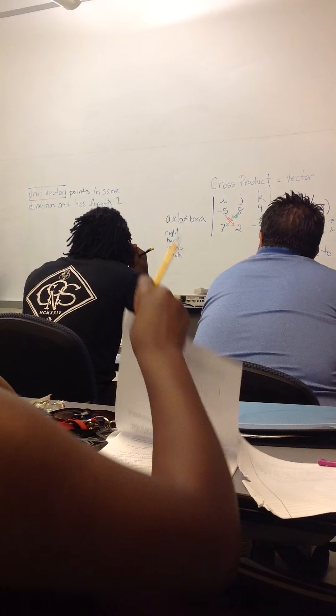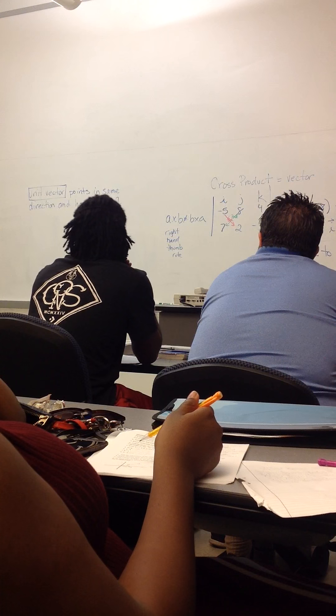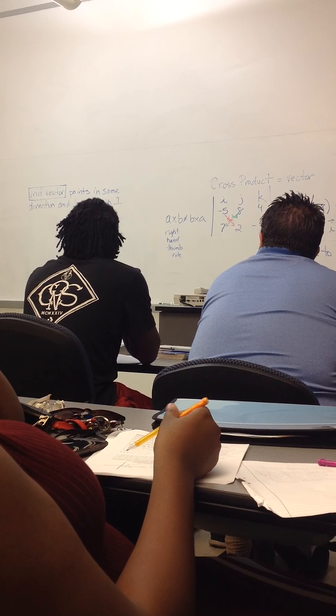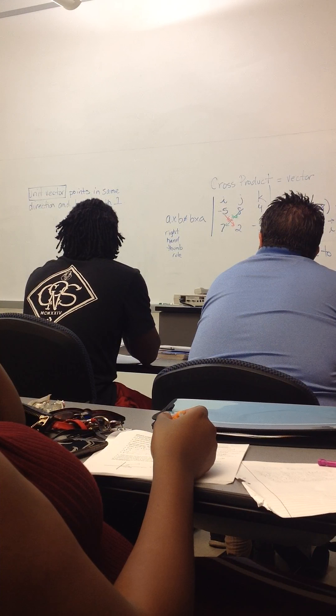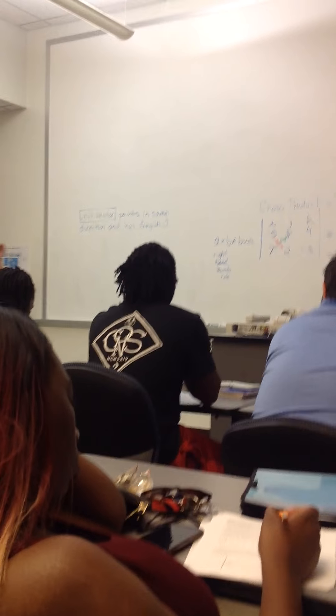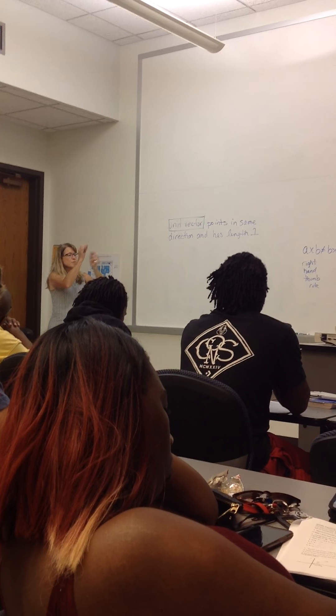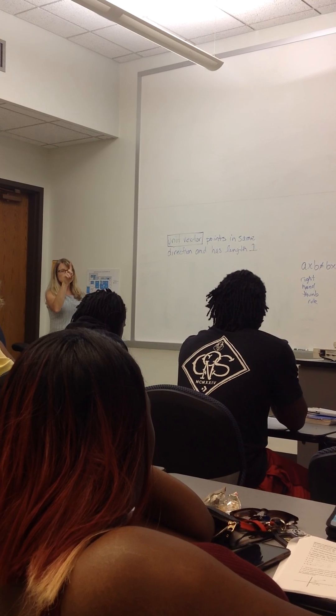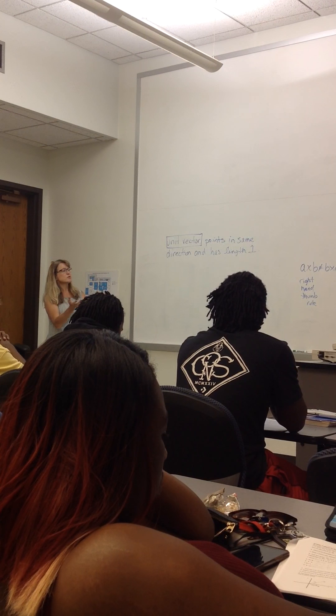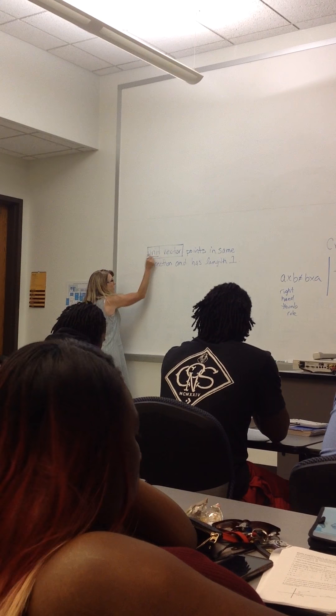It points in the same direction as some other vector and has length 1. If a vector's length is already 1, then it's its own unit vector. Picture a sphere made by infinitely many vectors coming out from the origin with radius 1. Every one of those vectors is its own unit vector. Unit means one unit.